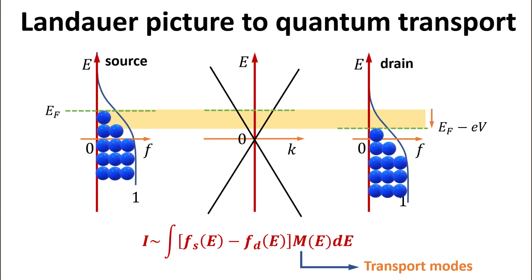The current should then be proportional to the number of transport modes, m, weighted by the difference in the source-drain Fermi functions, integrated over energy. We shall elaborate and derive an explicit expression for m later.